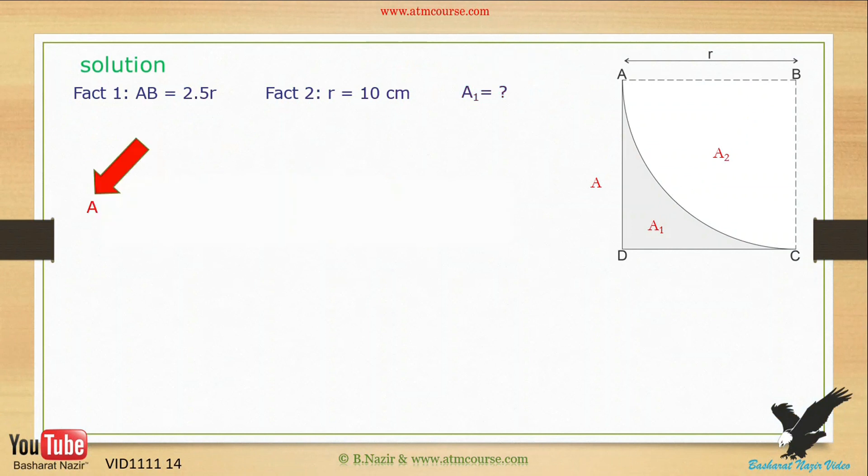First we write down A. Since ABCD is a square shape then its area is just AB multiply by AB. Write down the formula for the area of a square, which is AB multiply by AB.